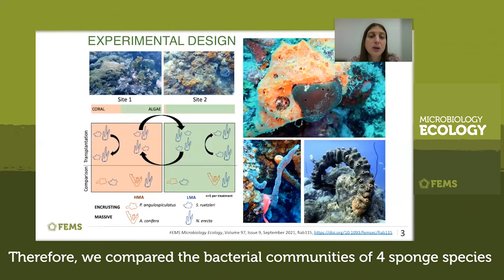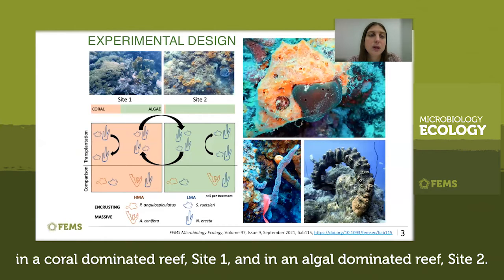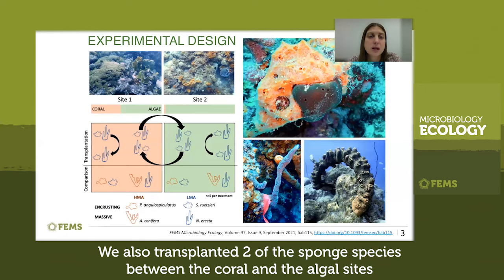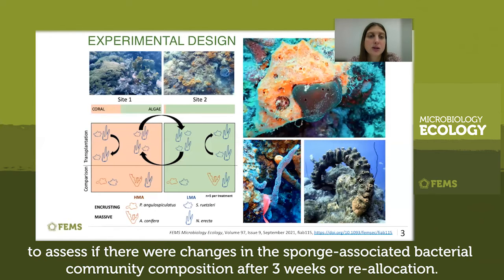Therefore, we compared the bacterial communities of four sponge species in a coral-dominated reef, site 1, and in an algal-dominated reef, site 2. We also transplanted two of the sponge species between the coral and the algal sites to assess if there were changes in the sponges' associated bacterial community composition after three weeks of reallocation.